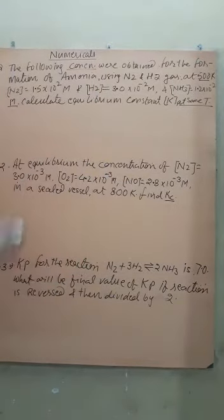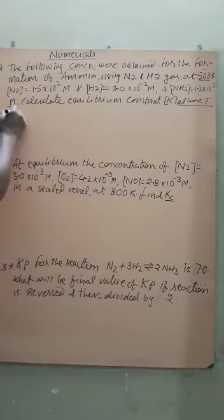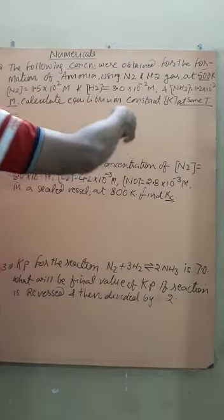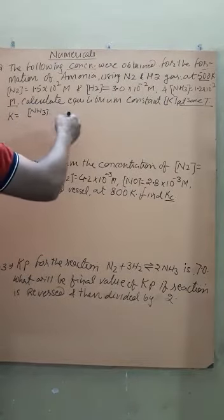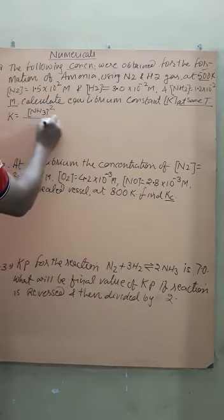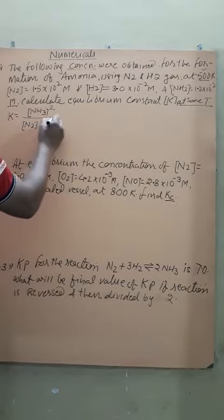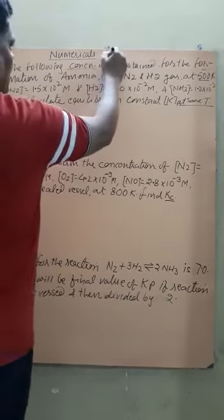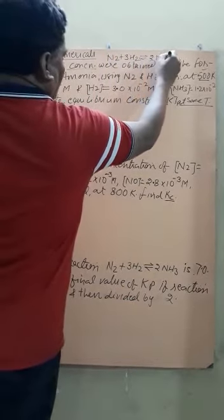It is very important that the temperature remains the same — 500 Kelvin — because increasing or decreasing temperature will change the equilibrium constant. First, we write the expression for the equilibrium constant Kc. N₂ and H₂ are reactants and ammonia is the product. The reaction is N₂ + 3H₂ → 2NH₃, so Kc = [NH₃]² / ([N₂][H₂]³).